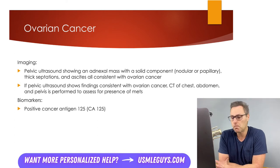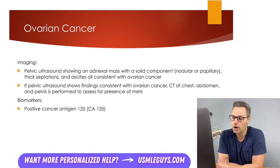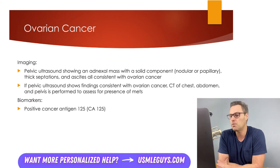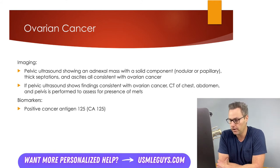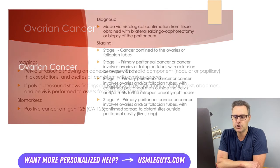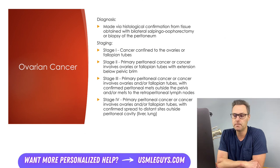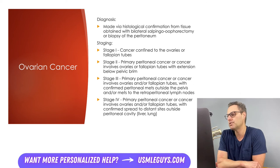There are many biomarkers being investigated for initial evaluation and monitoring of ovarian cancer. The best-studied and most frequently used is cancer antigen 125, CA-125. Positive CA-125 is associated with ovarian cancer, though it is only approved for use in monitoring disease progression and recurrence. Ovarian cancer, cancer of the fallopian tube or peritoneum, is diagnosed with histology from tissue obtained via bilateral salpingo-oophorectomy or biopsy of the peritoneum.